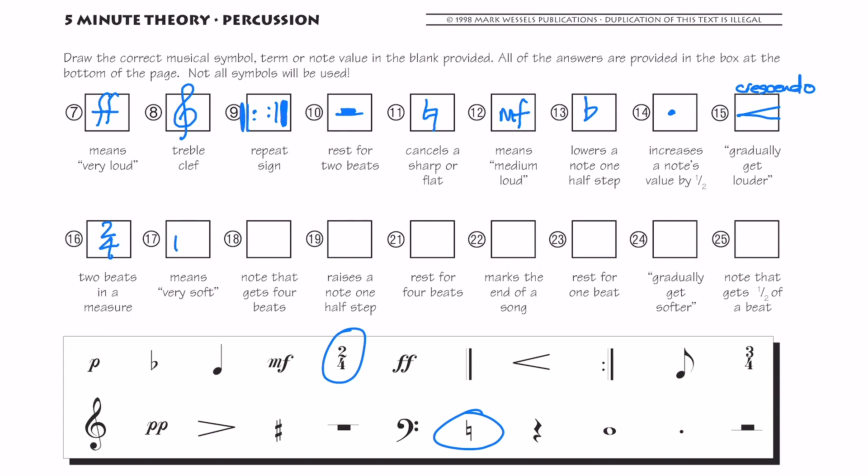Very soft. So soft is one, very soft is two. Pianissimo. A note that gets four beats. Remember a whole note gets four beats. What raises a note one half step? A sharp sign. A rest for four beats. So we rested for two beats on number ten. Now we do the opposite. Remember a whole rest is a box that holds on to the line.